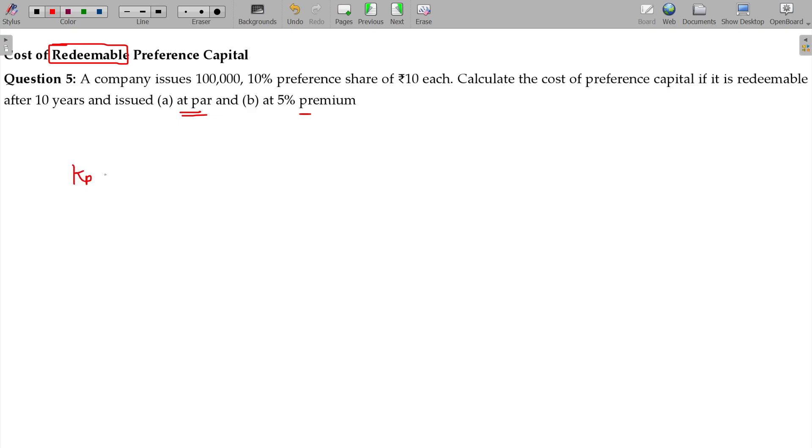For redeemable preference shares, Kp is equivalent to preference dividend plus the difference between redeemable price and net proceeds divided by the number of years. This will be amortized over the life span, the whole divided by redeemable price plus net proceeds by 2.